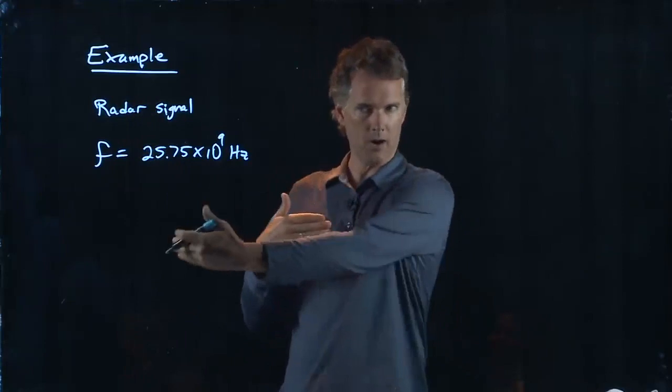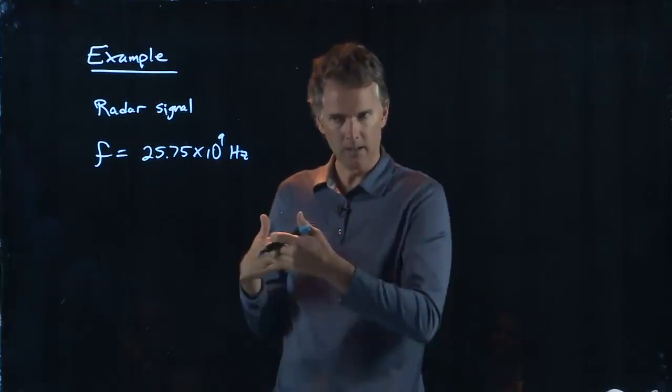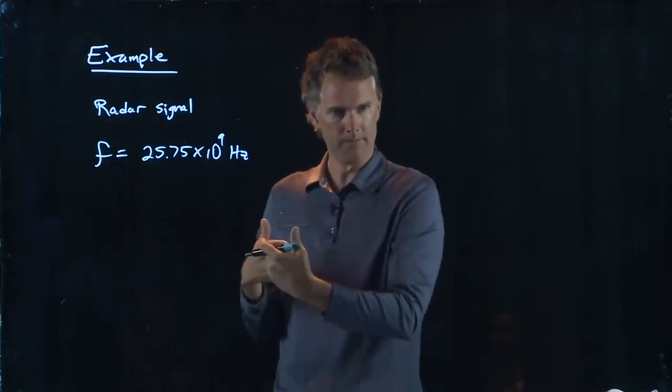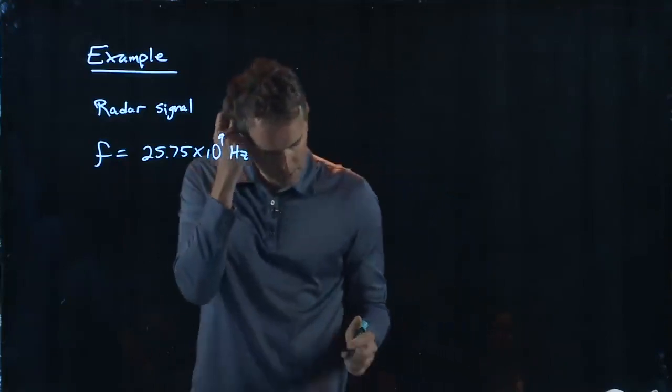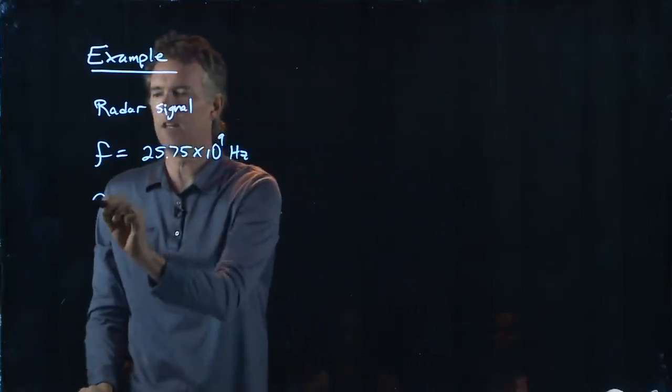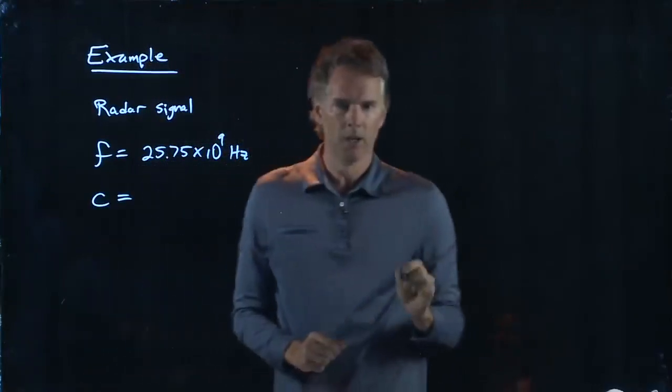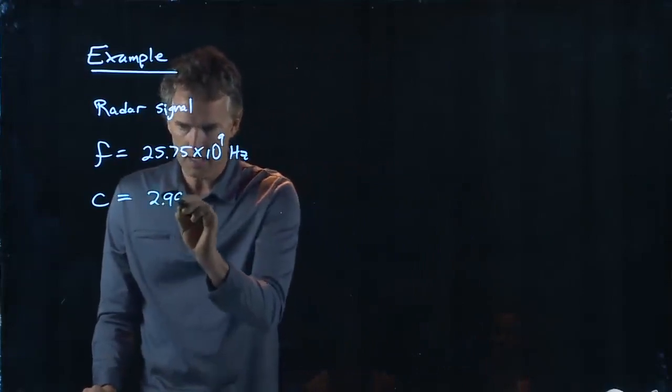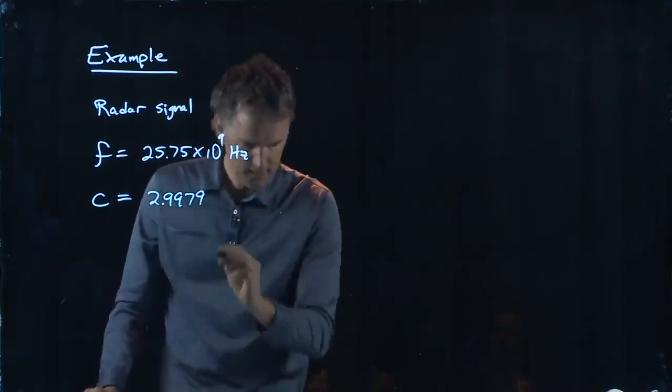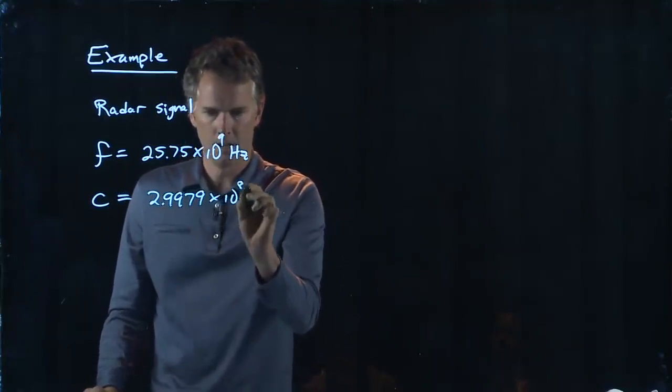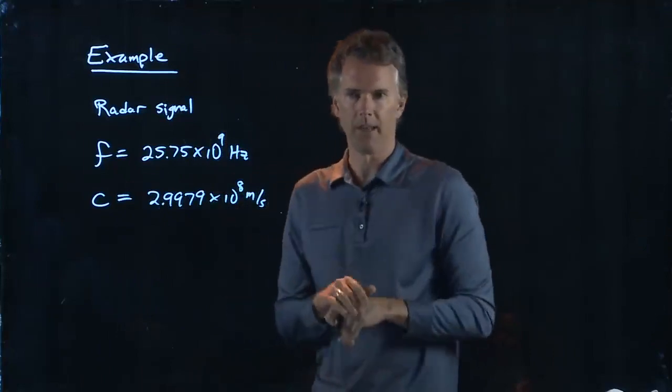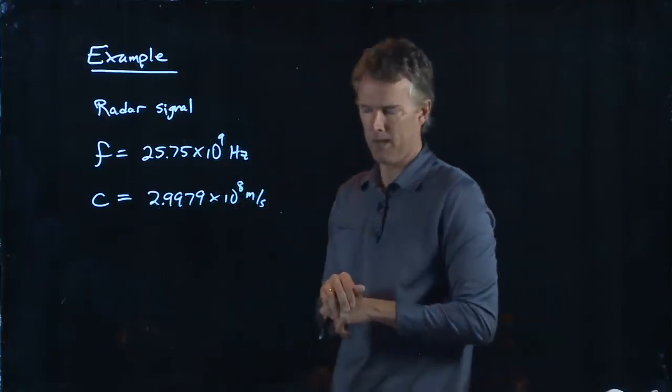And so you can use radar to detect opponents and range—how far away are they. So the speed of light, they tell us, is not really 3 times 10 to the 8th. It is actually 2.9979 times 10 to the 8 meters per second. So it's pretty close to 3 times 10 to the 8th, and that's why we usually approximate it.